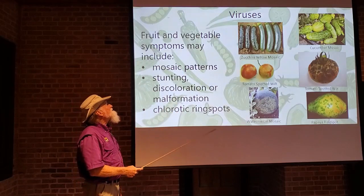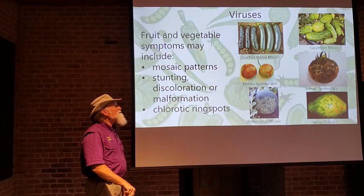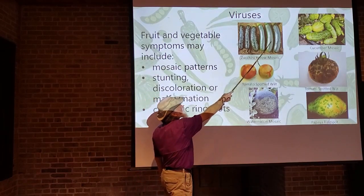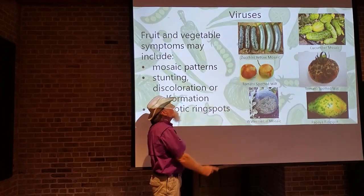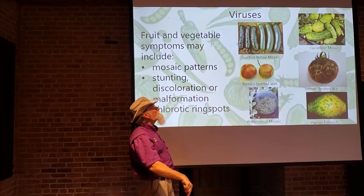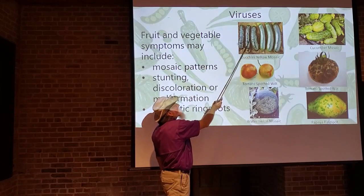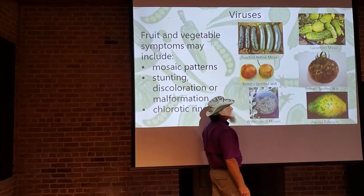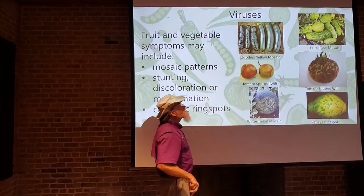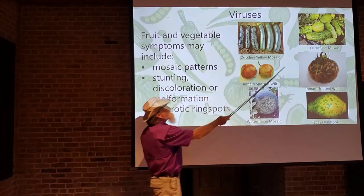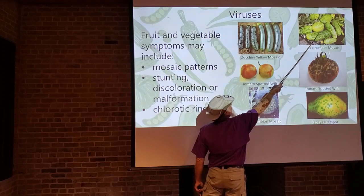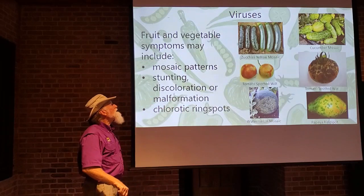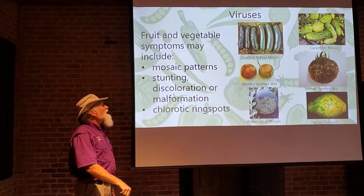On fruits and vegetables that are virus-infected, you'll get all kinds of symptoms. Healthy zucchini compared to zucchini infected with zucchini yellow mosaic virus — it's distorted, wrinkly, with bumps on it. Cucumbers infected with cucumber mosaic virus are very misshapen, with a mosaic pattern on the outside showing light green and dark green alternating. Discoloration and distortion are common symptoms of viruses on fruits.